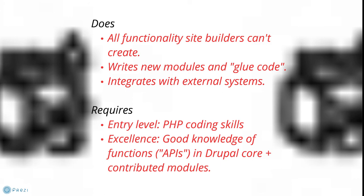If you'd like to become a Drupal coder, what you need to get started is PHP coding skills. You also need some site-building knowledge. If you want to become really good at Drupal coding, you need solid knowledge of the APIs in Drupal core and contributed modules — the functions available that you can use when writing your own code, building upon existing functions in Drupal core.